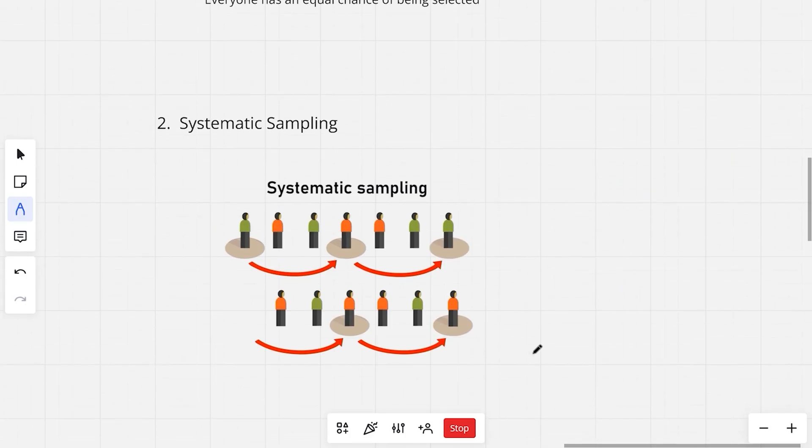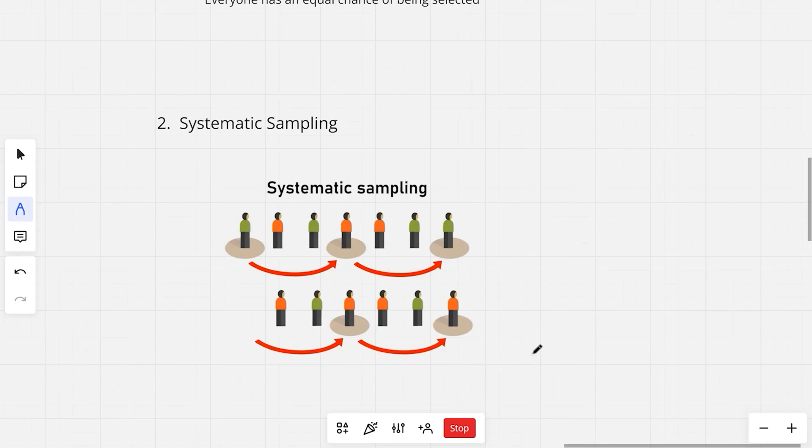The next sampling method is systematic sampling. Systematic sampling is a way of picking people or items for your data in a regular step-by-step pattern. Previously we were choosing people randomly. Over here, we are going to select every nth person or item from a list or group. Say for example, I ask every third person I meet about their opinion for school lunches. Systematic sampling is simple and quick and it ensures that you get a spread of data without asking or testing every single person or item.